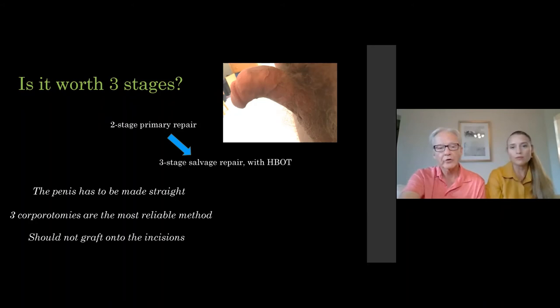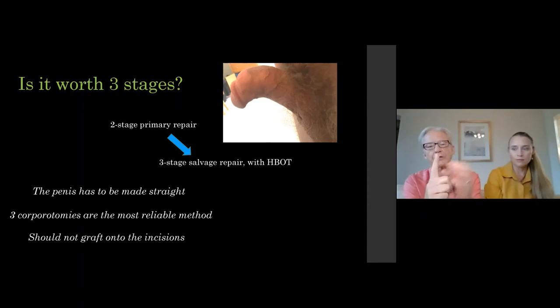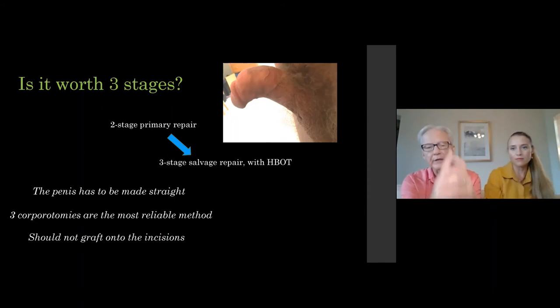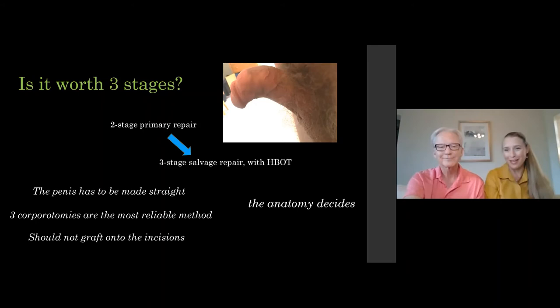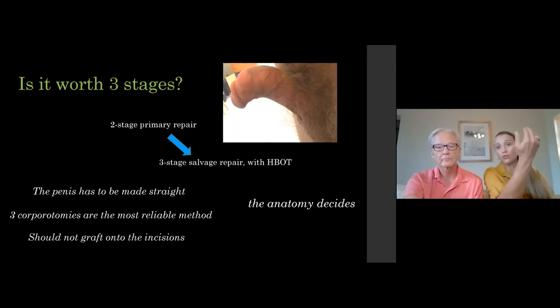Don't put grafts on the corporotomy incisions. The urethraplasty graft should not go on those incisions either. We only graft at the same time as straightening when the graft will be beyond the corporotomies — on intact corpora. It's the anatomy that decides what we do: for distal repairs, urethral plate anatomy didn't matter, but when it comes to curvature, whether the bend is distal or proximal determines whether the urethra reaches past the corporotomies.